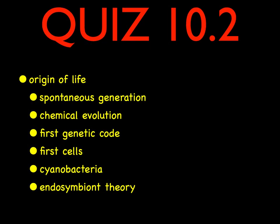That finishes up section 10.2: the origin of life — spontaneous generation, chemical evolution, the first genetic code, what the first cells were, what cyanobacteria did, and what the endosymbiont theory is. Study hard for your quiz and we'll see you next time.